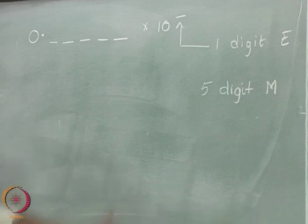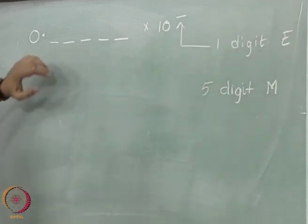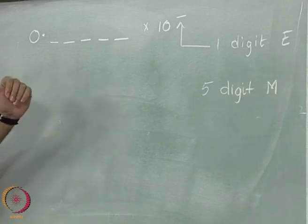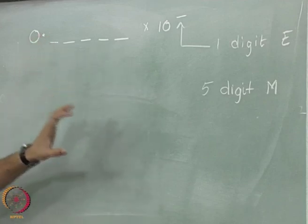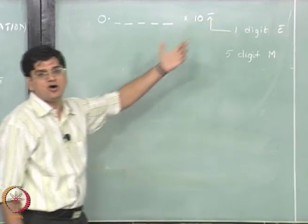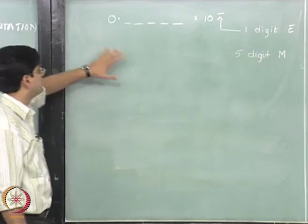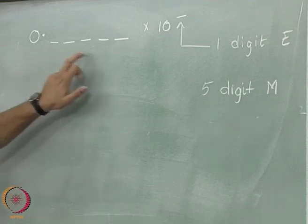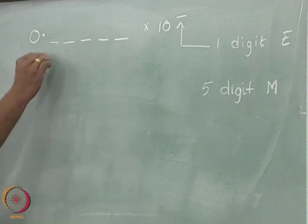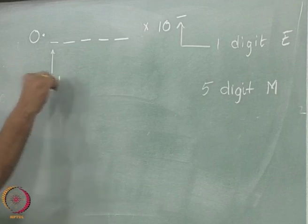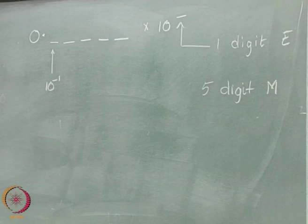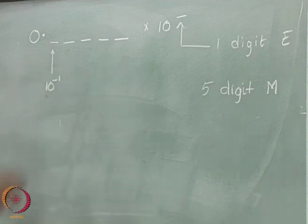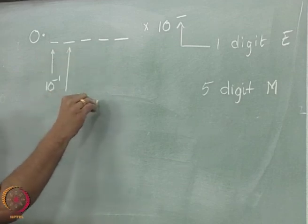We will just look at positive values of the exponent for now. In binary notations, you use a sign bit to determine the sign of the number and a signed way of representing the exponent. For simplicity, let us assume we are only going to represent positive numbers with a positive exponent. The first blank in the mantissa is multiplied by 10 to the power minus 1, the second by 10 to the power minus 2, and so on.